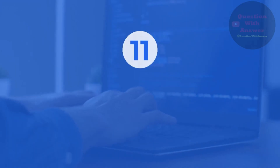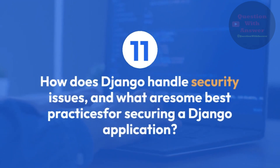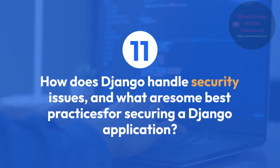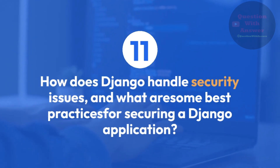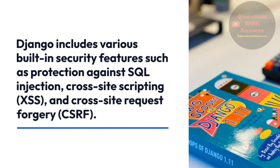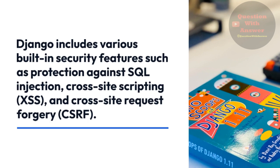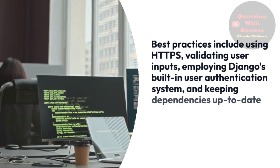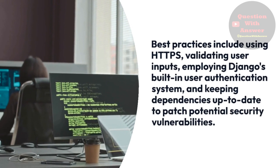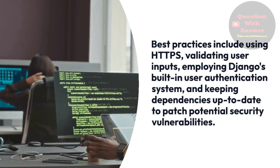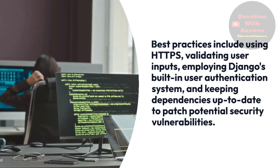Question 11: How does Django handle security issues, and what are some best practices for securing a Django application? Answer: Django includes various built-in security features such as protection against SQL injection, cross-site scripting or XSS, and cross-site request forgery or CSRF. Best practices include using HTTPS, validating user inputs, employing Django's built-in user authentication system, and keeping dependencies up-to-date to patch potential security vulnerabilities.